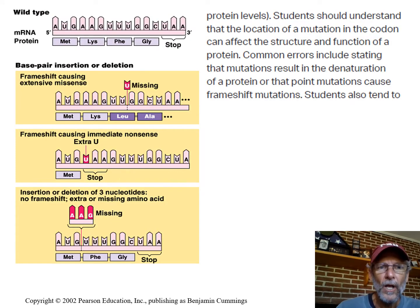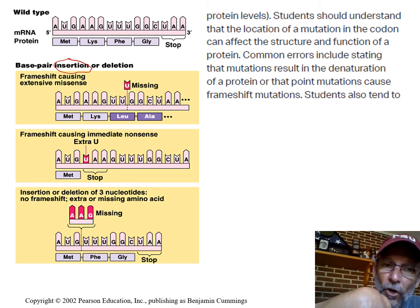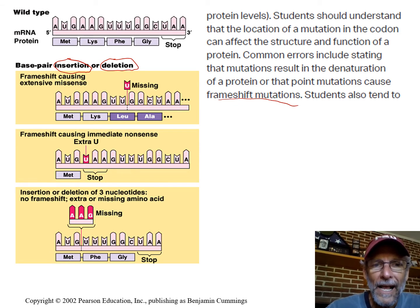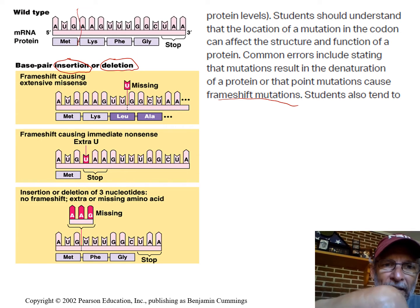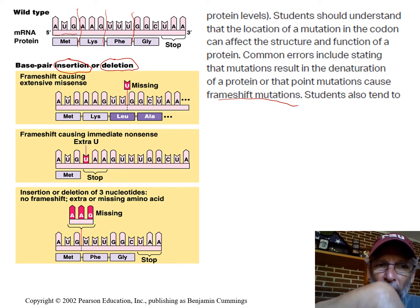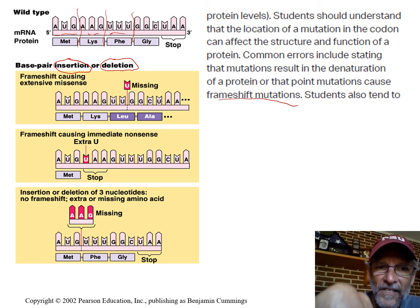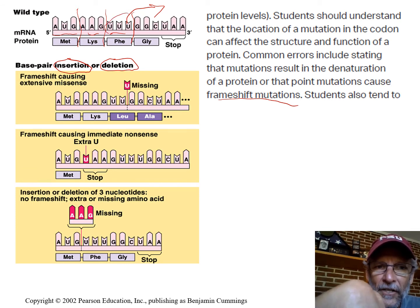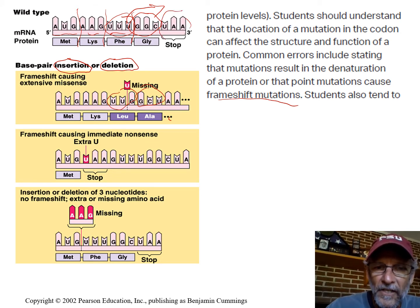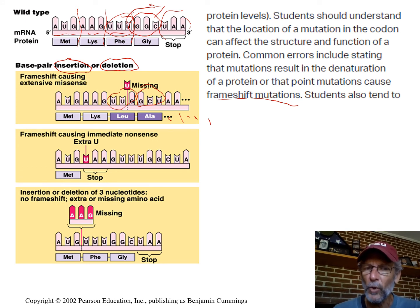Insertion and deletion are also point mutations but they're the kind that can cause a frameshift mutation. A frameshift refers to the reading frame — the ribosome reads three-base segments, determined by where the start codon is. If you take out one base, from that point on instead of reading UUU-GGC in the reading frame, you read UUG-GCU — you get a premature stop codon, missing amino acids. Any frameshift mutation would have a large effect on protein structure and therefore function.